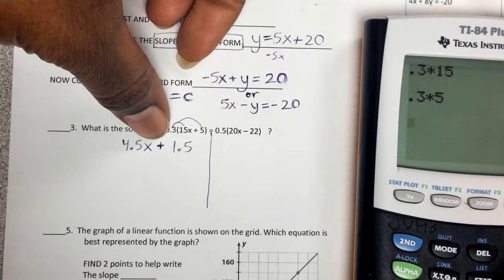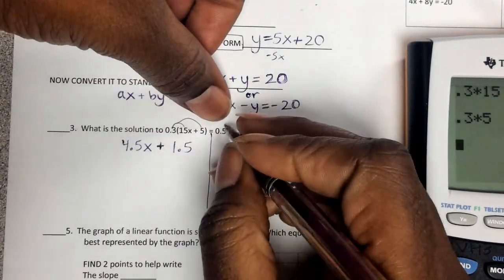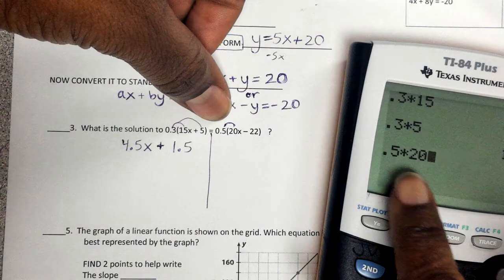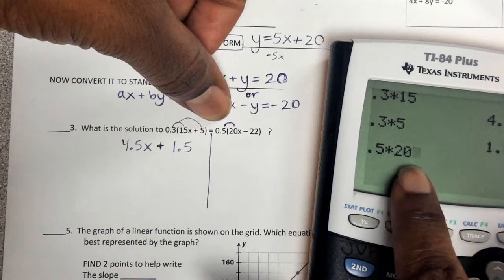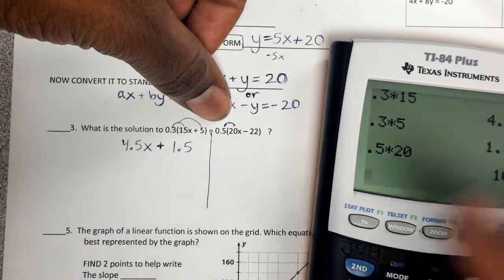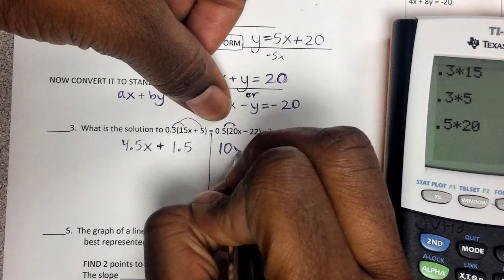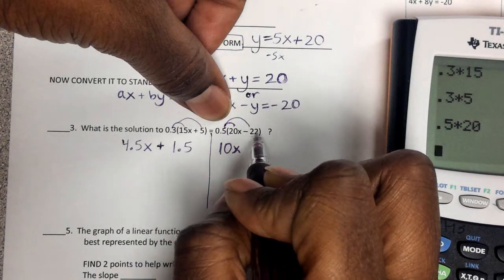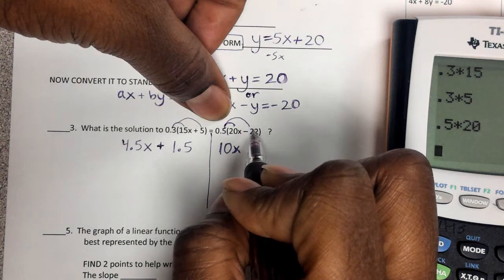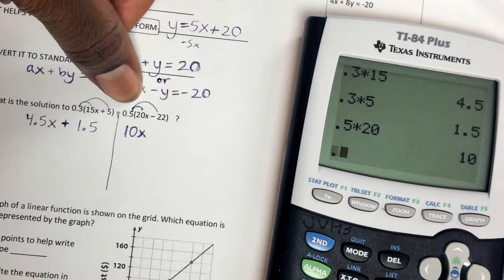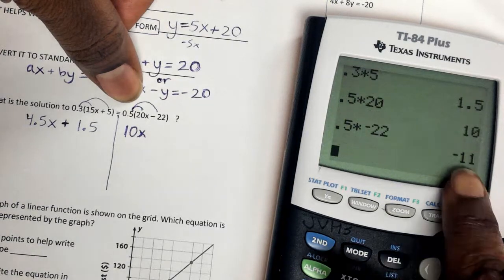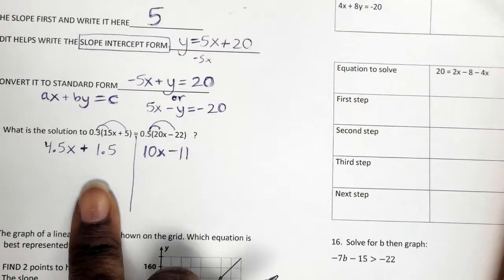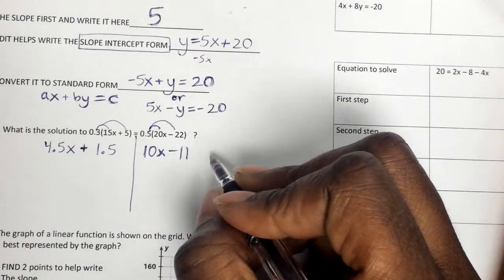So that's what this side becomes when I distribute. Now this side I've got to distribute again. So 0.5 times 20. Don't put the x when you're trying to calculate it here. So that's 10, but now you've got to put the x when you write it. And then 0.5 times a, what do you think, is that a 22? Not really, it's a negative 22. So 0.5 times negative 22. Negative 11. So now what I'm trying to think is, I just distributed, now I'm looking for like terms.